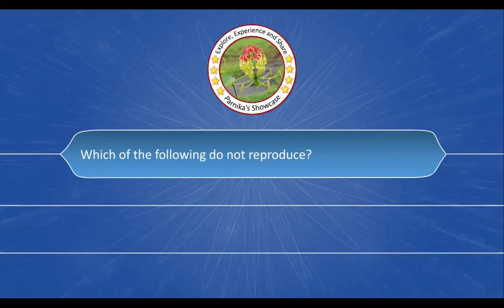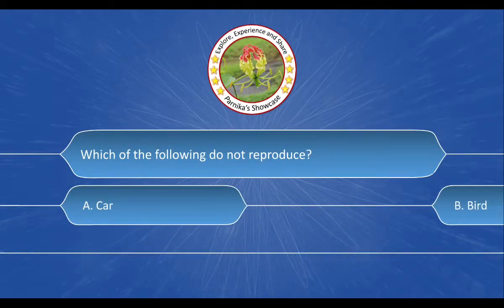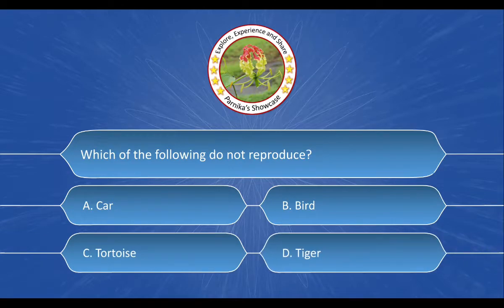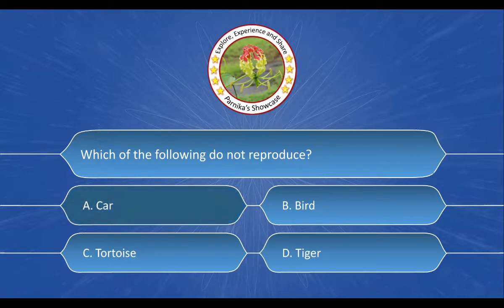Next question: which of the following do not reproduce? The options are: a) car, b) bird, c) tortoise, d) tiger. The correct answer is option a) car.